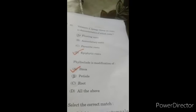Question 85: a spongy tissue on roots is characteristic of which roots? The right answer is D option, epiphytic roots. Phylloclade is the modification of stem, A option.